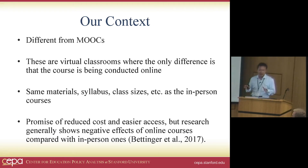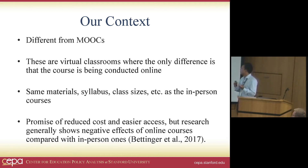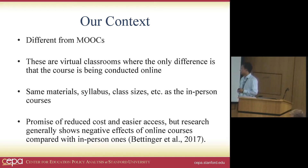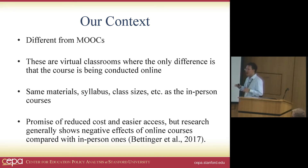The context of this study is very different from MOOCs. These college online courses try to mimic real in-person college courses by having the same syllabi, the same materials, 25 students in a classroom, a professor, and similar class size. These kinds of courses are very popular, especially in the for-profit world, because they promised a reduction of cost and easier access for students, as these courses are often asynchronous — people can log in to the online forum whenever they want.